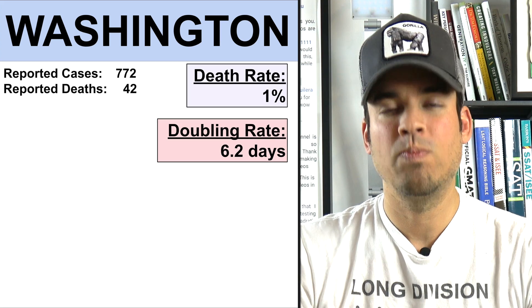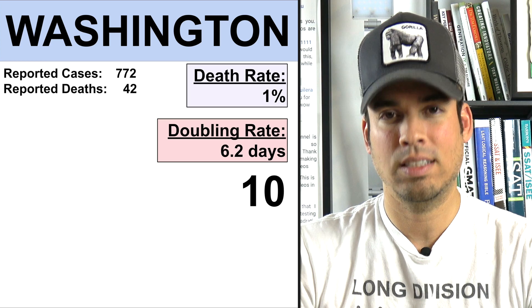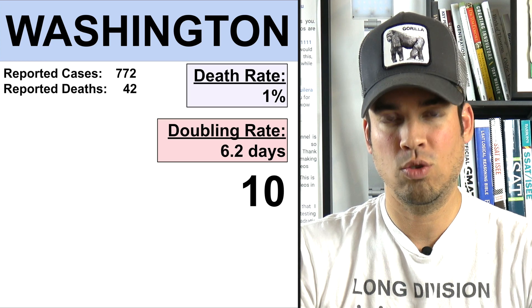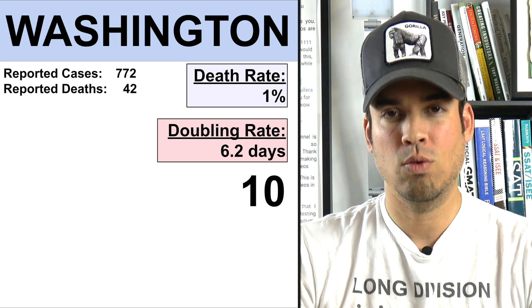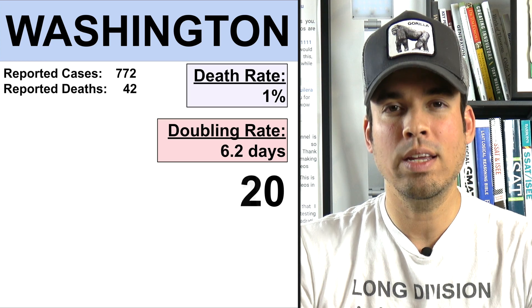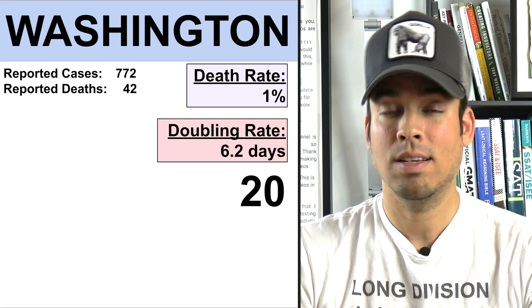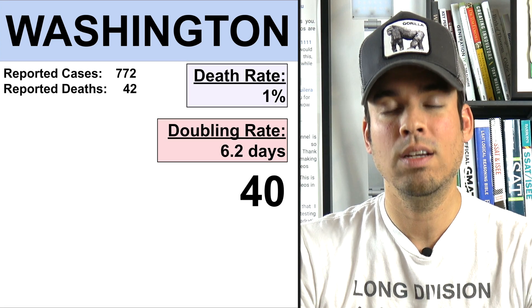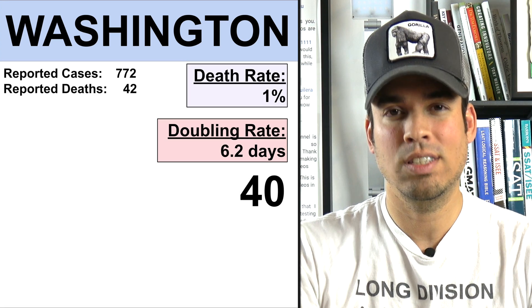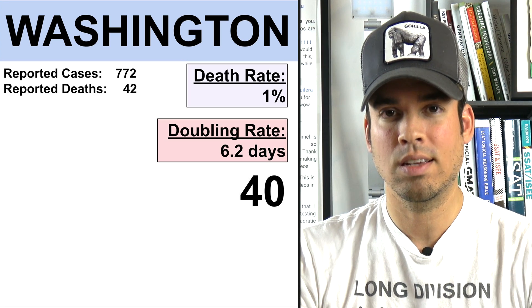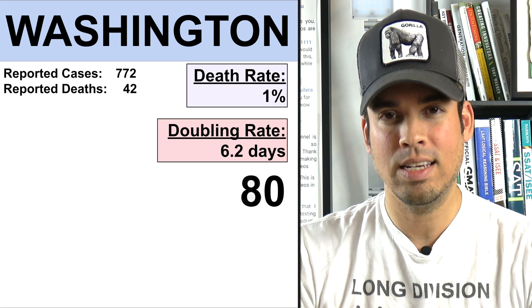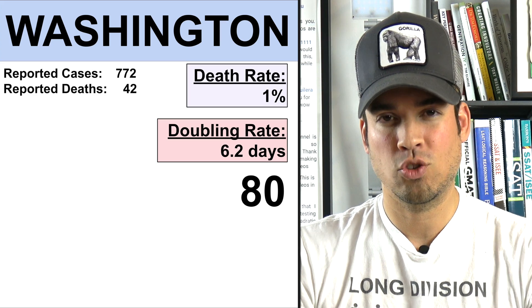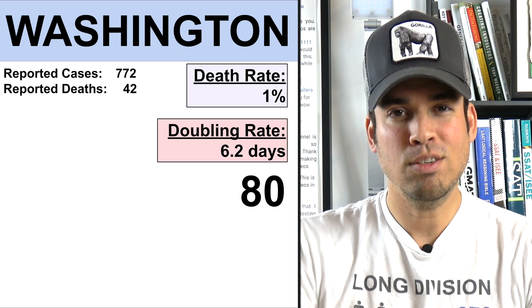For example, if there are 10 active cases, in 6.2 days there will be 20 active cases, in another 6.2 days there will be 40, and in another 6.2 days there will be 80 cases. This is what is called exponential growth.